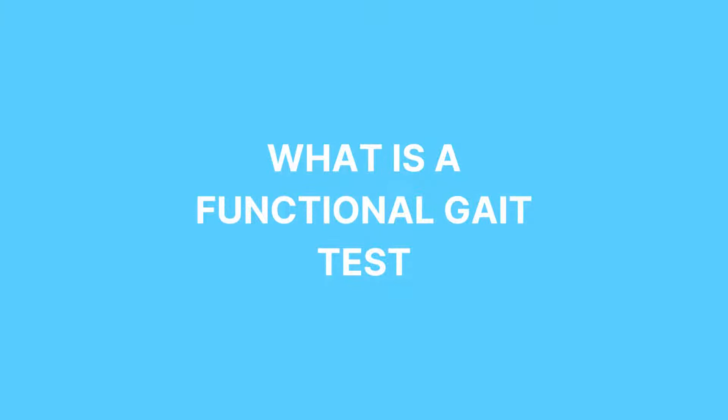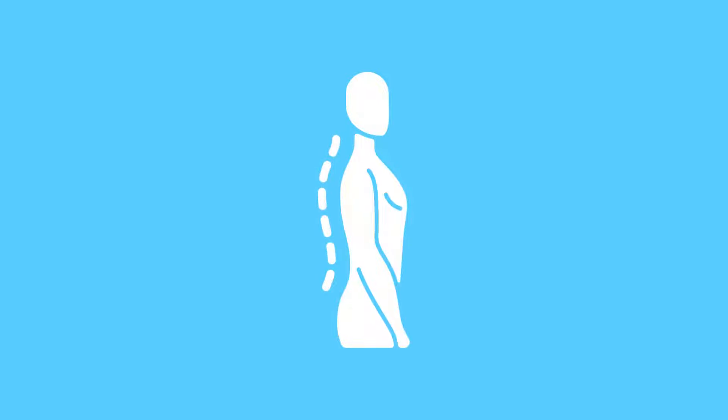What is a Functional Gait Test? The Functional Gait Assessment, or FGA, is an assessment for checking a client's postural stability and balance. It's also known as the modified version of the Dynamic Gait Index, or the DGI.